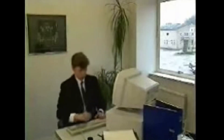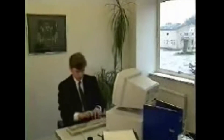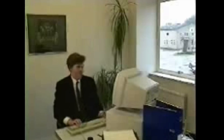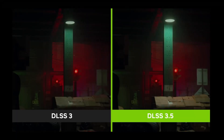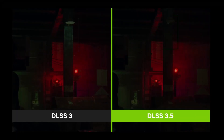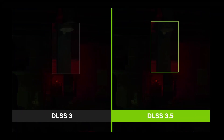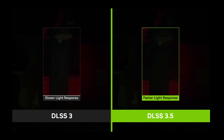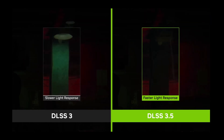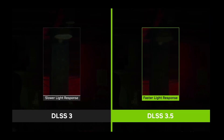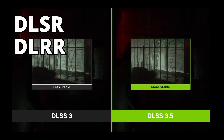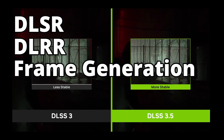You probably have heard that DLSS 3.0 only works on RTX 40 series and above. But recently, DLSS 3.5 was announced and it works on all RTX cards. How does that work? Also, what is DLSR, DLRR, and frame generation?